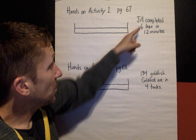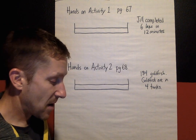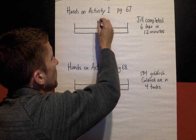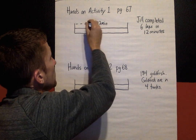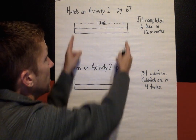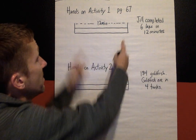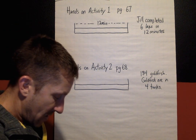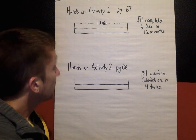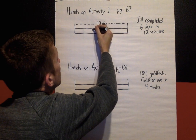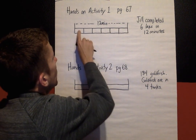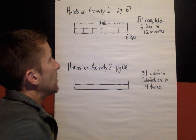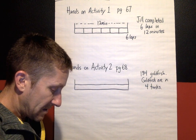So going back to what it tells me: Jill completed six laps in 12 minutes. My two totals are 12 minutes and six laps. I'm going to put 12 minutes on the bar. What that is telling you is that this whole bar represents 12 minutes, and in that 12 minutes, Jill completed six laps. So I'm going to divide up the bar into six laps — one, two, three, four, five, six. So this bar represents 12 minutes and it also represents six laps.